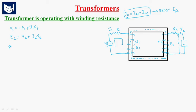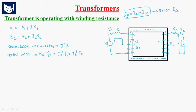Power losses are also called copper losses, which is equal to I²R. The total losses in the transformer will be losses in the primary winding plus losses in the secondary winding, that is I1²R1 plus I2²R2. This is the total copper losses in the transformer.